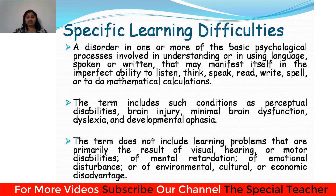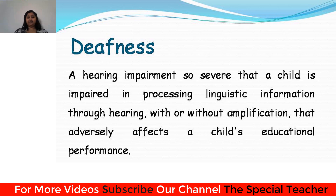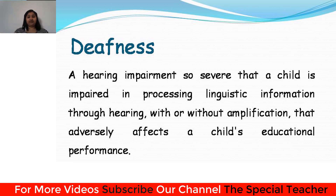Hearing impairment or deafness is when a person is not able to hear at a normal hearing level of approximately 25 decibels in both ears. A simple tuning fork test produces around 25 to 30 decibels, and if a person cannot hear that, it indicates a hearing problem. Hearing loss can be mild, moderate, severe, or profound, and it can affect one or both ears, creating difficulty hearing conversational speech or loud sounds.